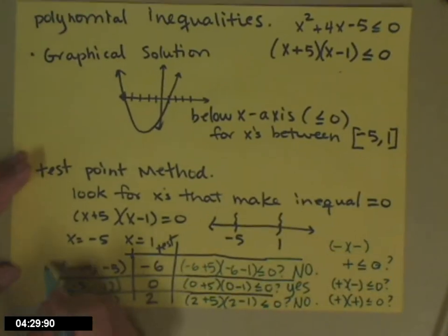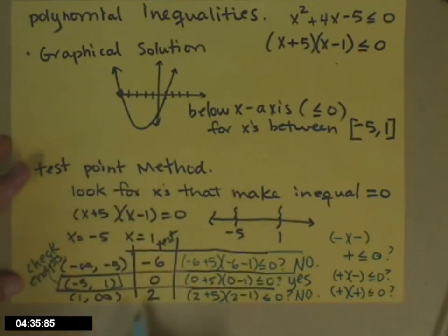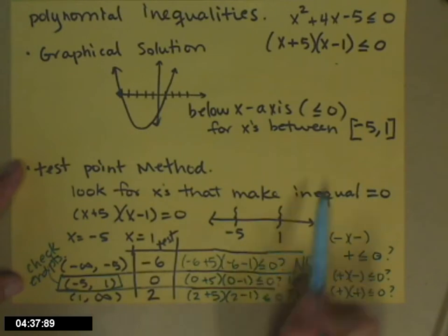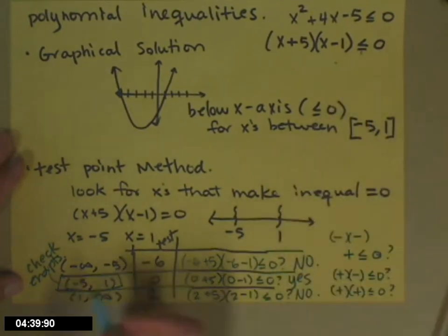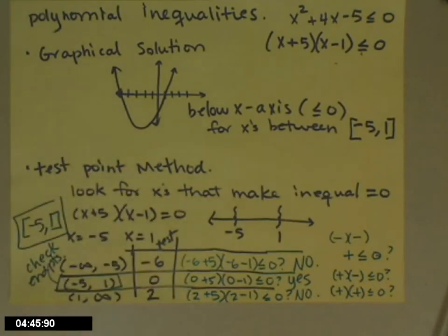So there's my solution set again. And then you would check the endpoints to see that since my inequality back up here had the equal sign on it, that you include both endpoints. And we get that same answer.